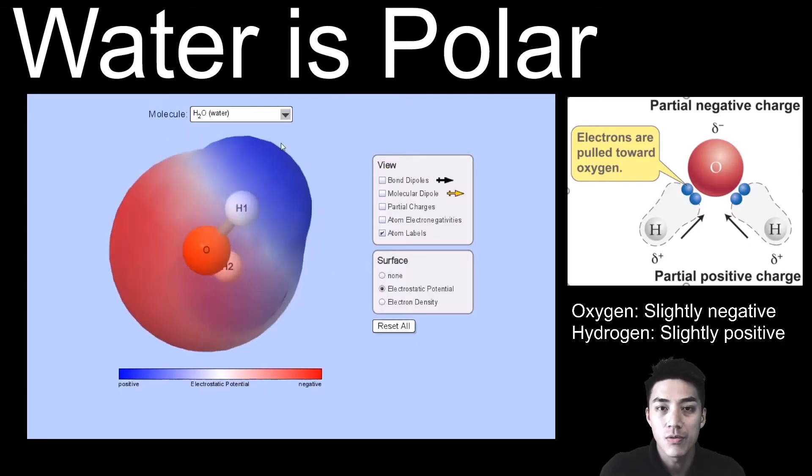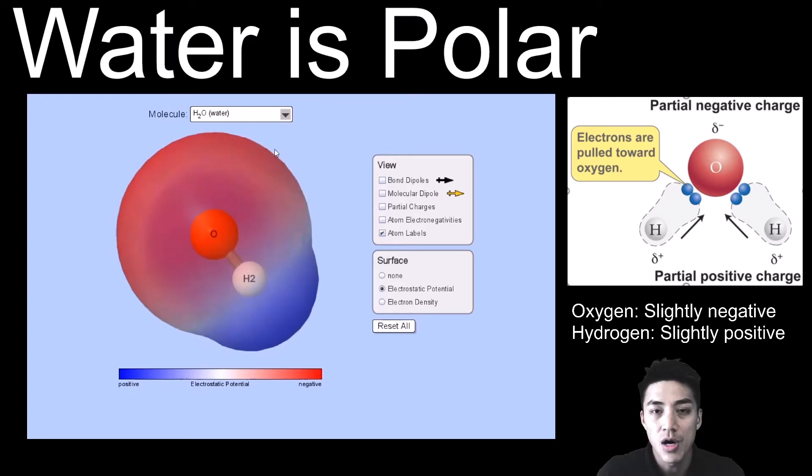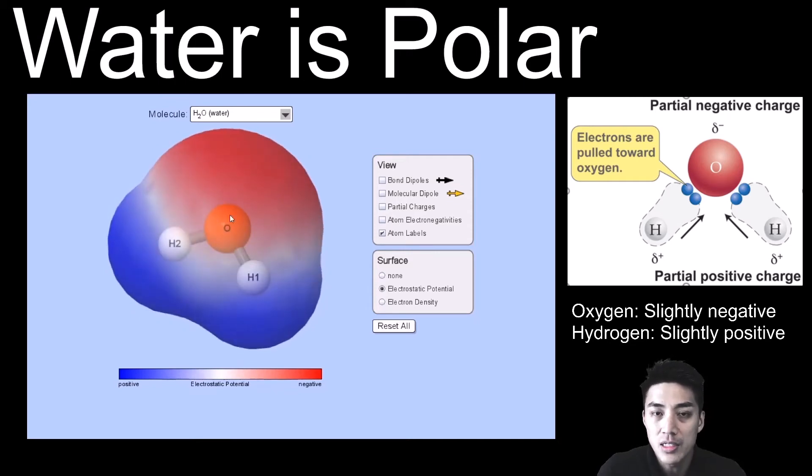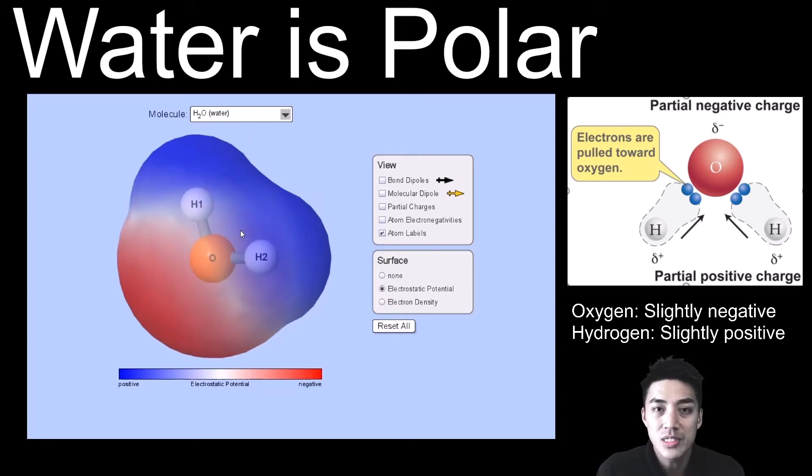To give you a better idea of what is meant by the phrase water is polar, or water has polarity, I've provided you with a 3D model. You can see in the model how oxygen is colored red. Red just means that it's slightly negative. And the reason why it's more negative is because oxygen is more electronegative. It wants the electrons a little bit more than the hydrogens do.